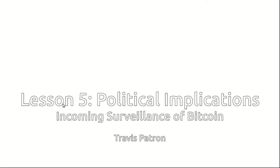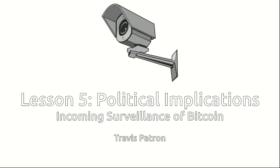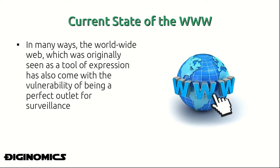This is lesson five: incoming surveillance of Bitcoin. In this lesson we take a look at the potential of Bitcoin to be used as a surveillance outlet, which comes with convenience and usability but at the cost of personal privacy. The current state of the world wide web is one in which it was originally seen as a tool of expression but has also come with a vulnerability of being a perfect outlet for surveillance.